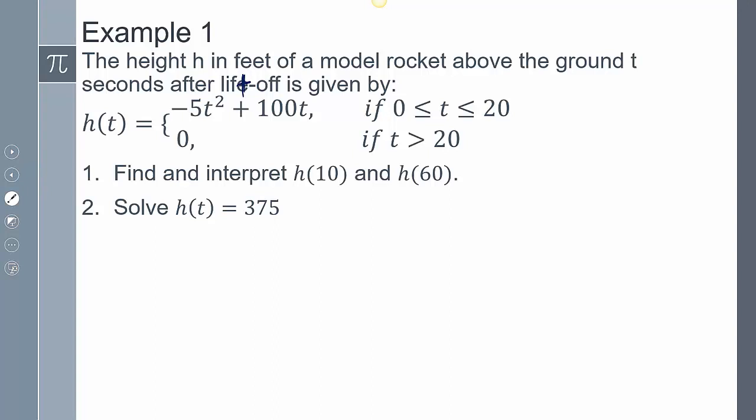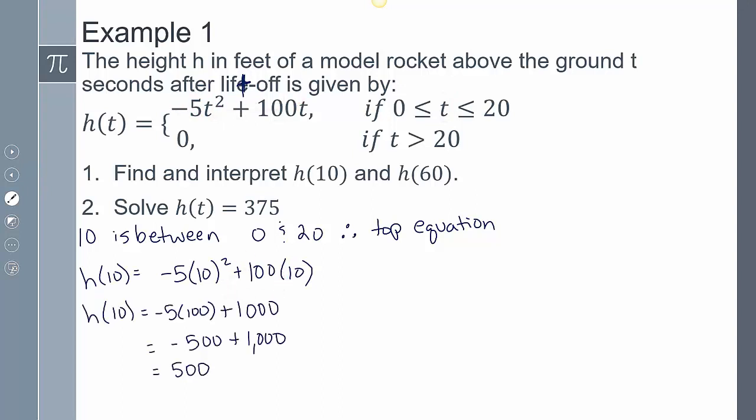So for the first one, it says find and interpret h(10) and h(60). So h(10), because 10 is between zero and 20. So 10 works for this function, meaning this value of 10, this is like that piecewise function. It only works for one of these, it's not going to work for both. And so this 10 works between zero and 20. And so 10 is going to be applied here. And so I can take 10 and I'm going to plug it into this function here, as I did so here. And now if I simplify that, I'm going to get it being 500. And so I can make the statement that my height is going to be 500 at that given value at 10 seconds, my height is going to be 500.